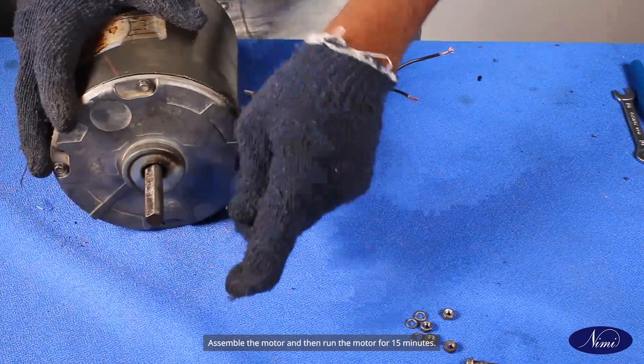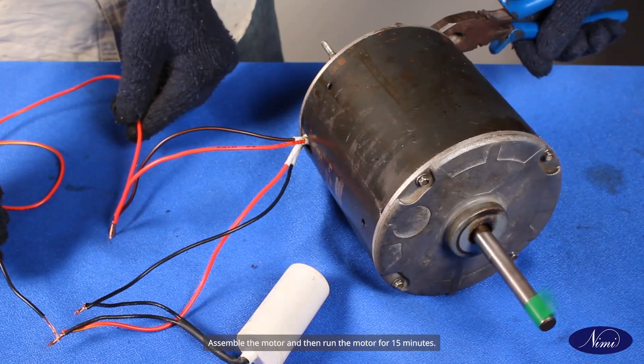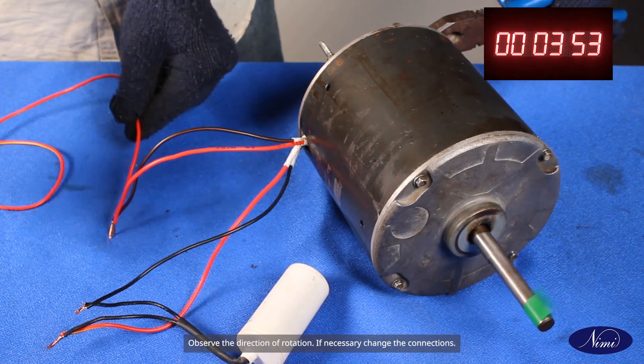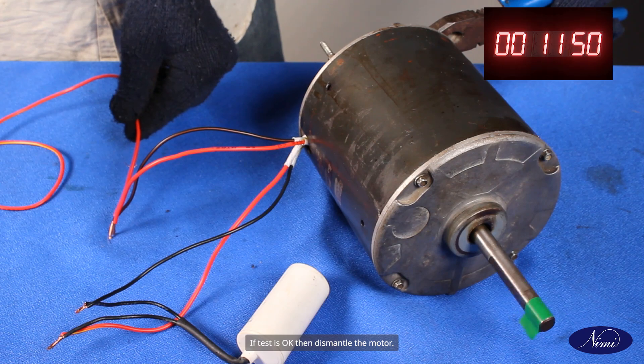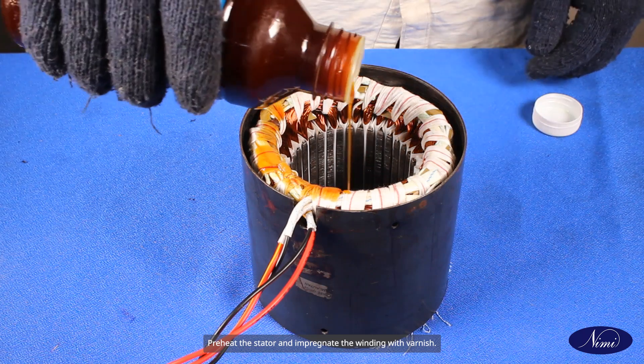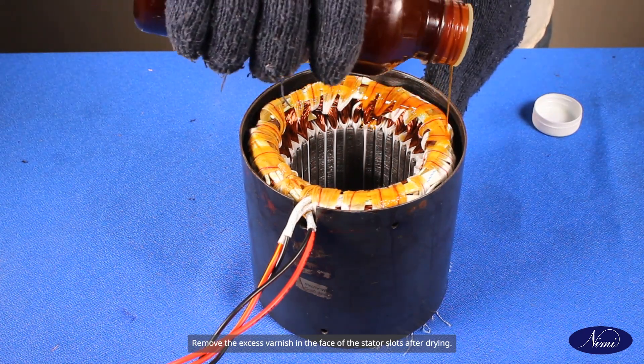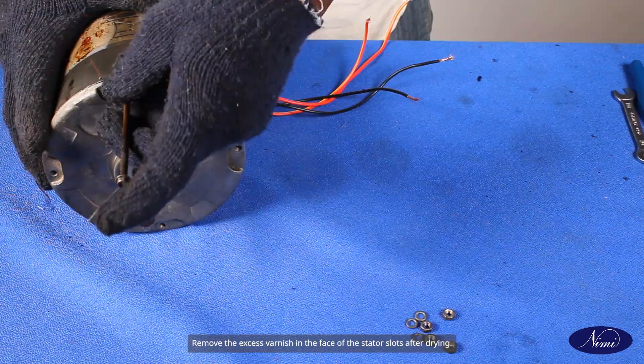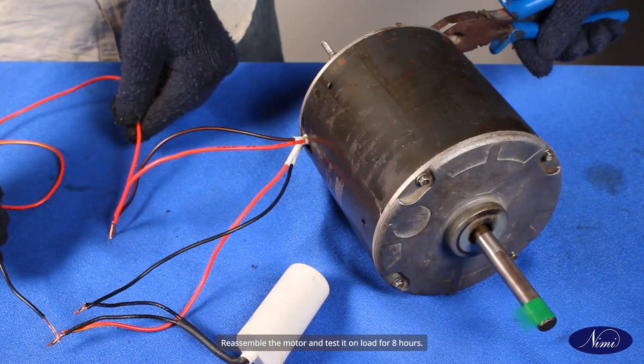Assemble the motor and then run the motor for 15 minutes. Observe the direction of rotation. If necessary, change the connections. If test is okay, then dismantle the motor, preheat the stator, and impregnate the winding with varnish. Remove the excess varnish in the face of the stator slots after drying.